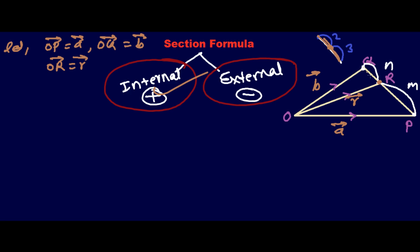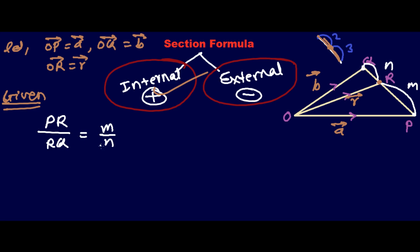We have to find vector r, which divides line PQ in ratio m:n. The given information is that PR divided by RQ equals m:n, where m and n are some scalar numbers. As you can see in the figure, this is the m section and this is the n section, and R is the point of division. Let's write this in vector form: vector PR divided by vector RQ equals m over n.